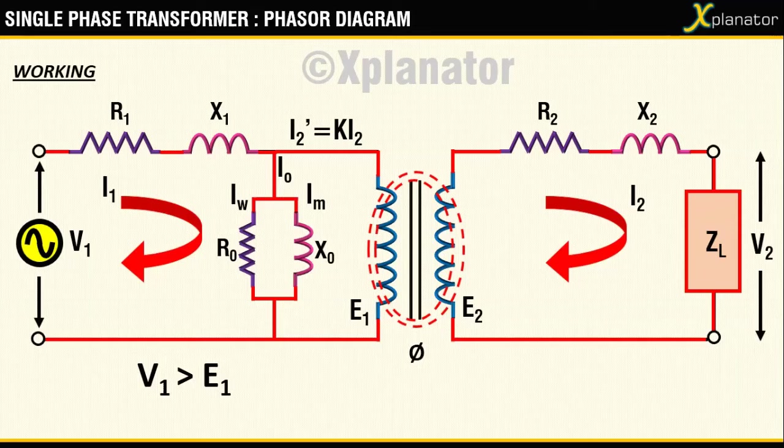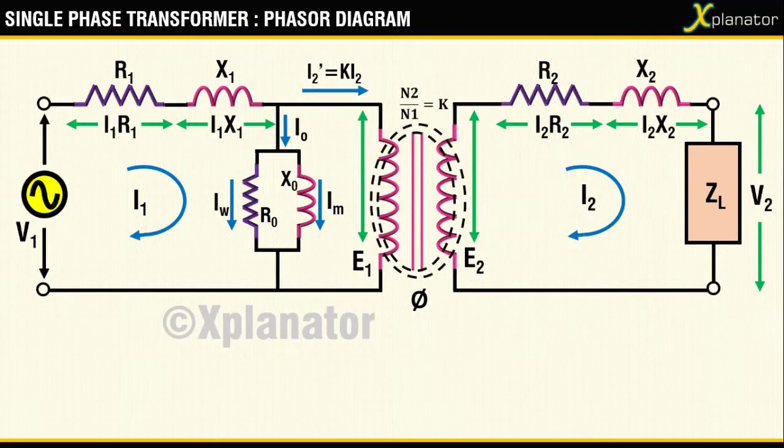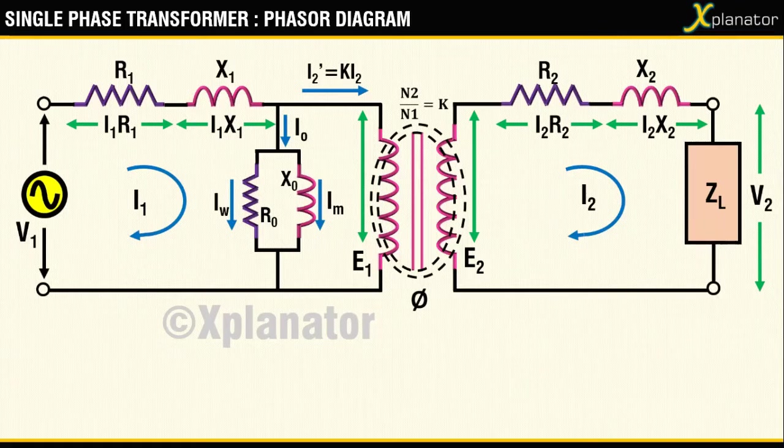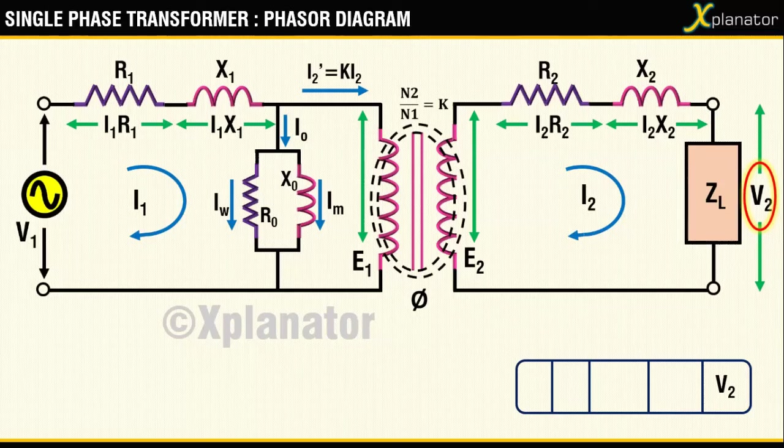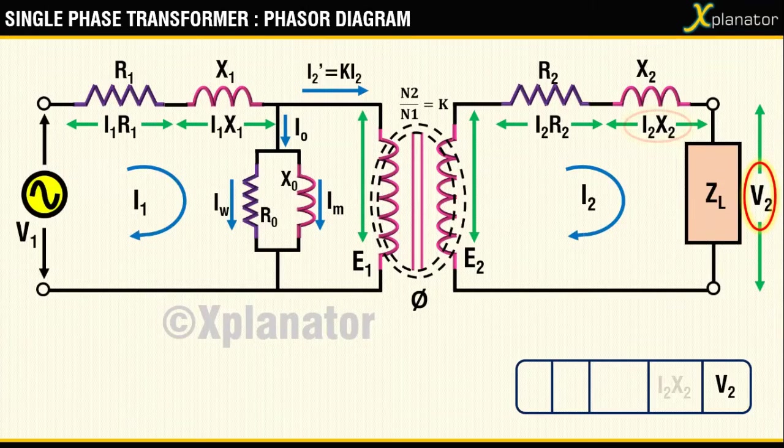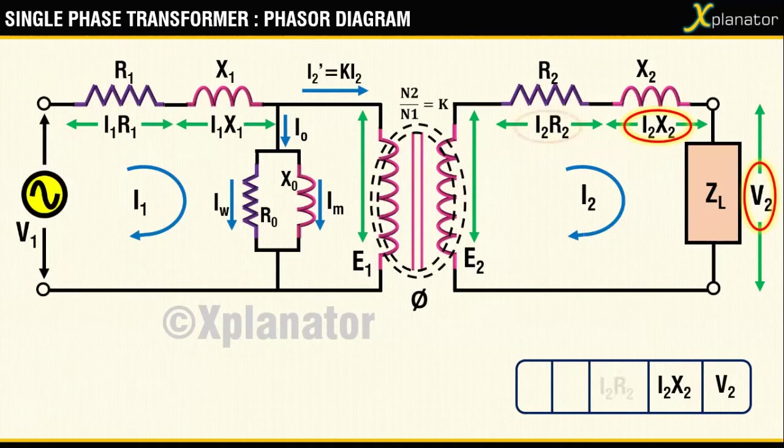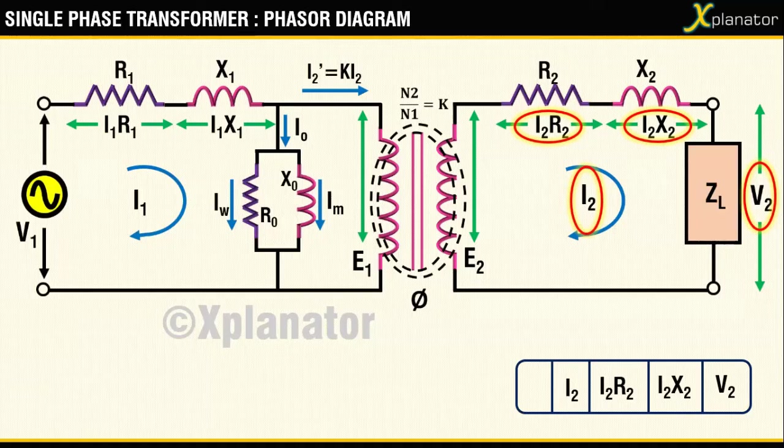Consider the circuit diagram for a single-phase transformer connected to an inductive load. Let's quickly list down the parameters which are to be drawn on this phasor diagram. Starting from the secondary side, you have a total of five terms: the first one is V2, which is the output voltage; next is I2X2, the drop due to magnetic leakage flux in the secondary circuit; I2R2, the drop due to winding resistance in the secondary circuit; I2, the secondary current; and E2, the induced EMF in the secondary winding.